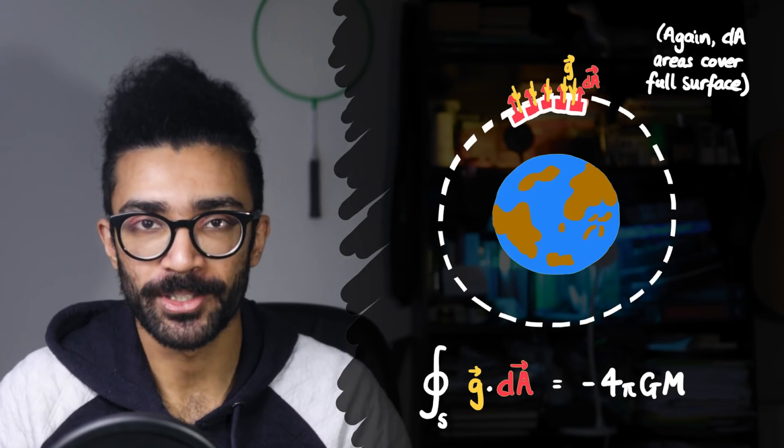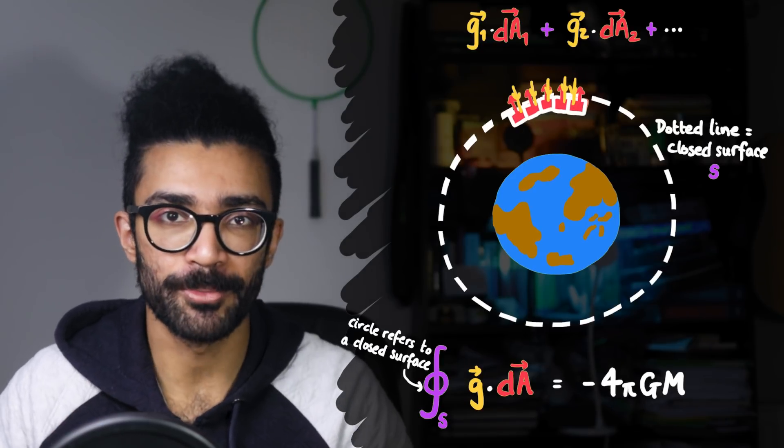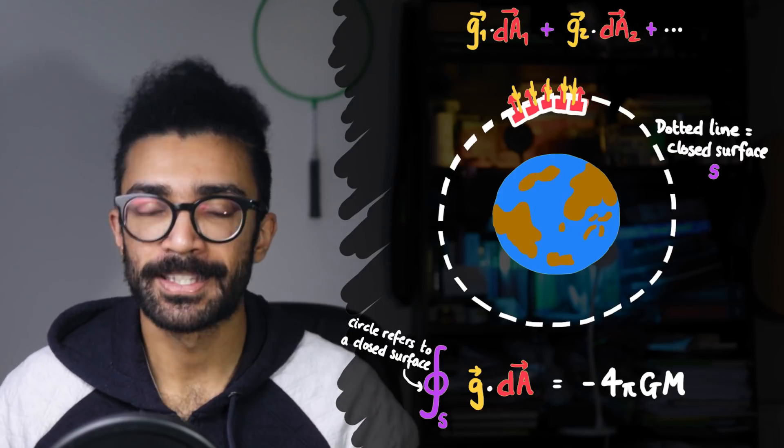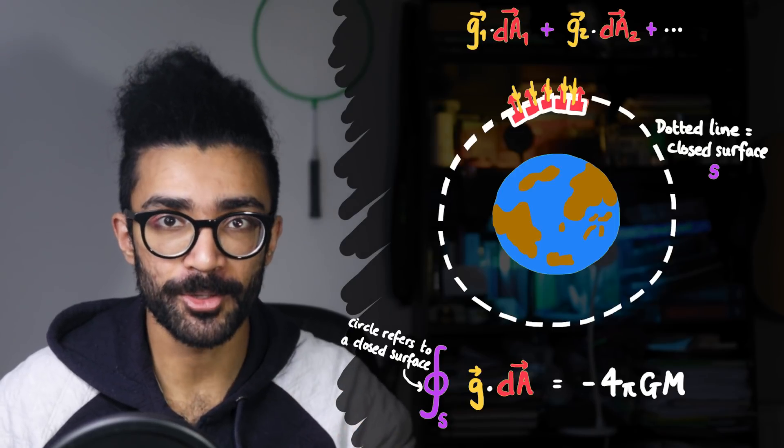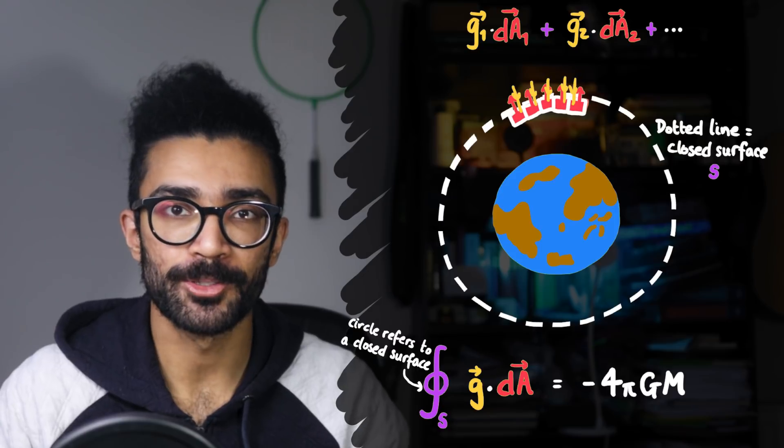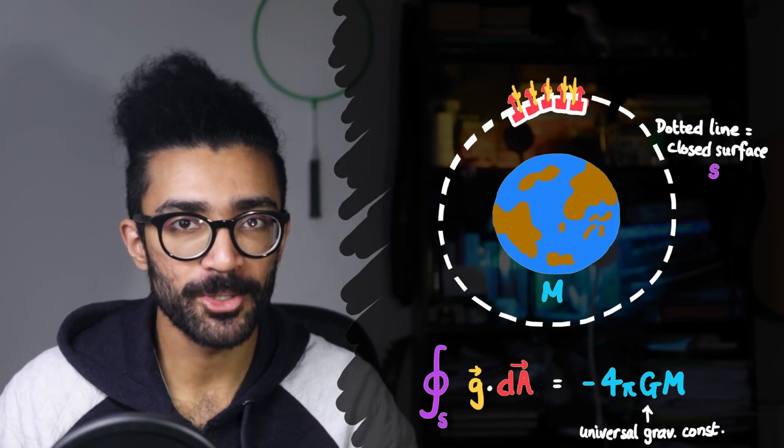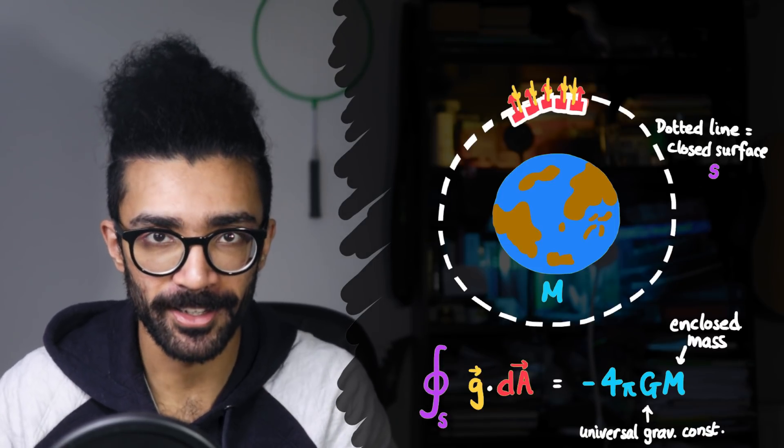So we find the dot product, g dot dA, for each one of these little area elements, and then we add up all the contributions to find what's going on over our entire closed surface. And that's exactly what the integral sign is about. It's telling us to add up all of those little contributions. And the sum over the entire closed surface must be equal to minus 4 pi Gm, where G is the universal gravitational constant, and m is the mass enclosed within our closed surface, in this case, the mass of the Earth.